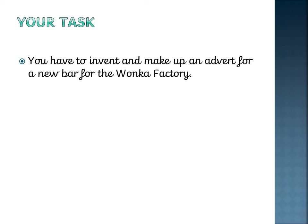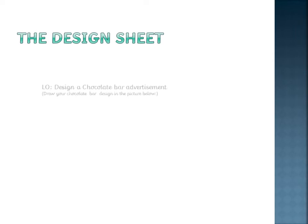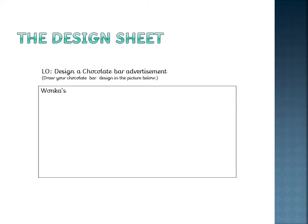First of all, you need to know what it looks like, so you have a planning sheet to help you. This is what the design sheet looks like. We have the yellow — it's already on the sheet, so don't worry about that. Design a chocolate bar advertisement. Draw your chocolate bar design in the picture box below. There it is — it's got Wonka's on it to start you off.